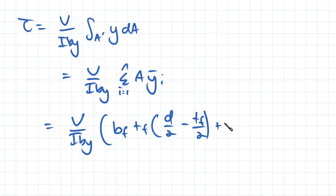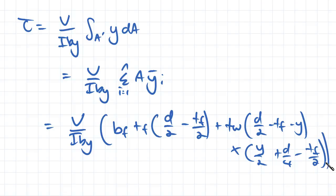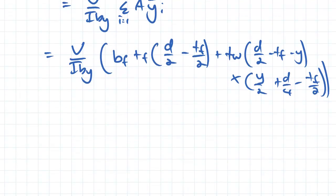For that upper rectangle, we had an area of thickness of web multiplied by d/2 minus thickness/2 minus y. Then multiplied to that, we had the distance between the centroids: y/2 plus d/4 minus thickness of flange/2. So now all we need to do is sub in.